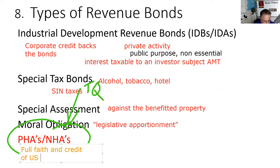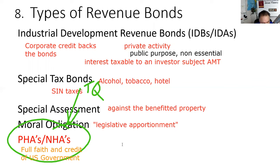The U.S. government can not only tax people but can actually print what they owe you. A doctor worried about whether low-income housing bond tenants can pay rent: these PHA bonds, these national housing authority bonds — test question — have the full faith and credit of the United States government.